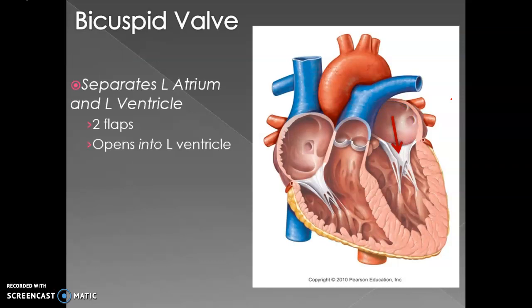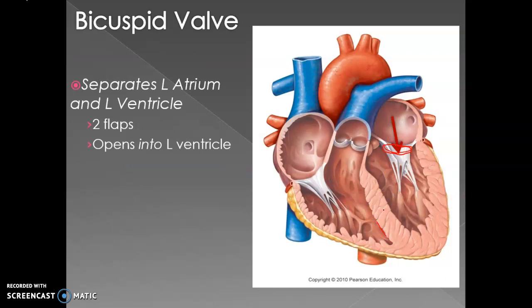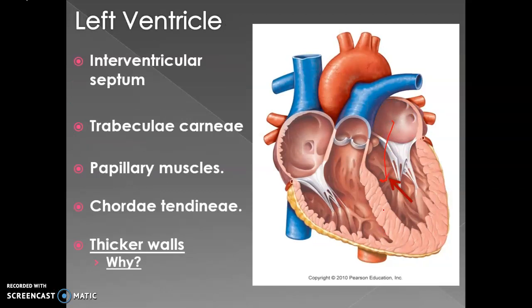Between the left atrium and the left ventricle we have the bicuspid valve, which allows unidirectional flow of blood into the left ventricle. The two ventricles are separated by the interventricular septum. The general muscles of the ventricles are trabeculae carneae. We also see papillary muscles — these finger-like muscles — and the chordae tendineae, which are white cord-like structures that attach the bicuspid valve to the papillary muscles.